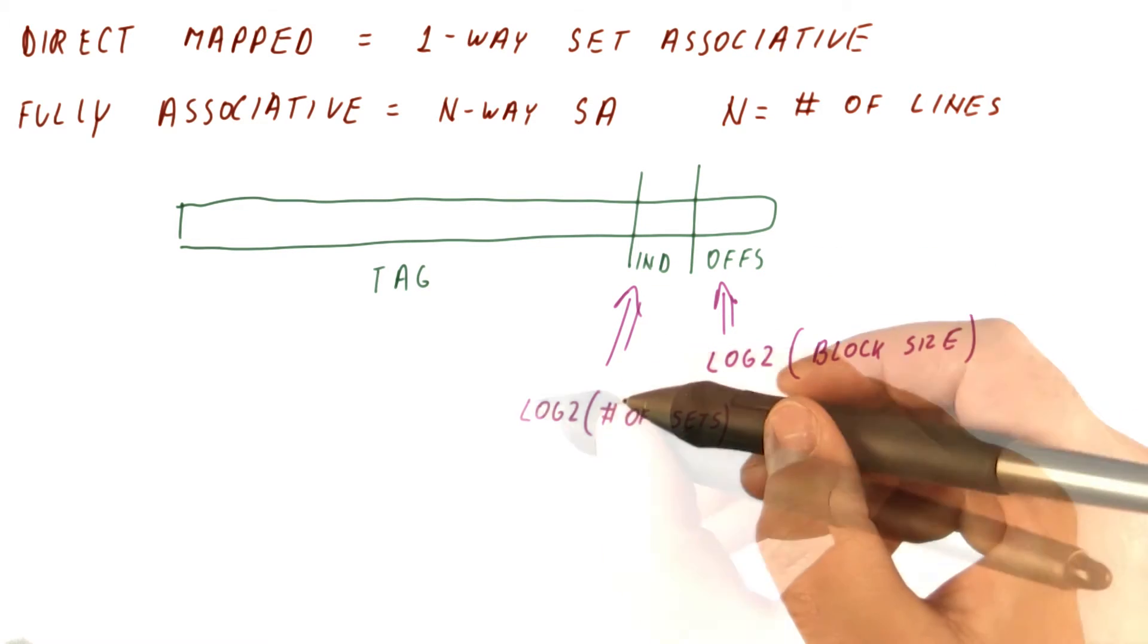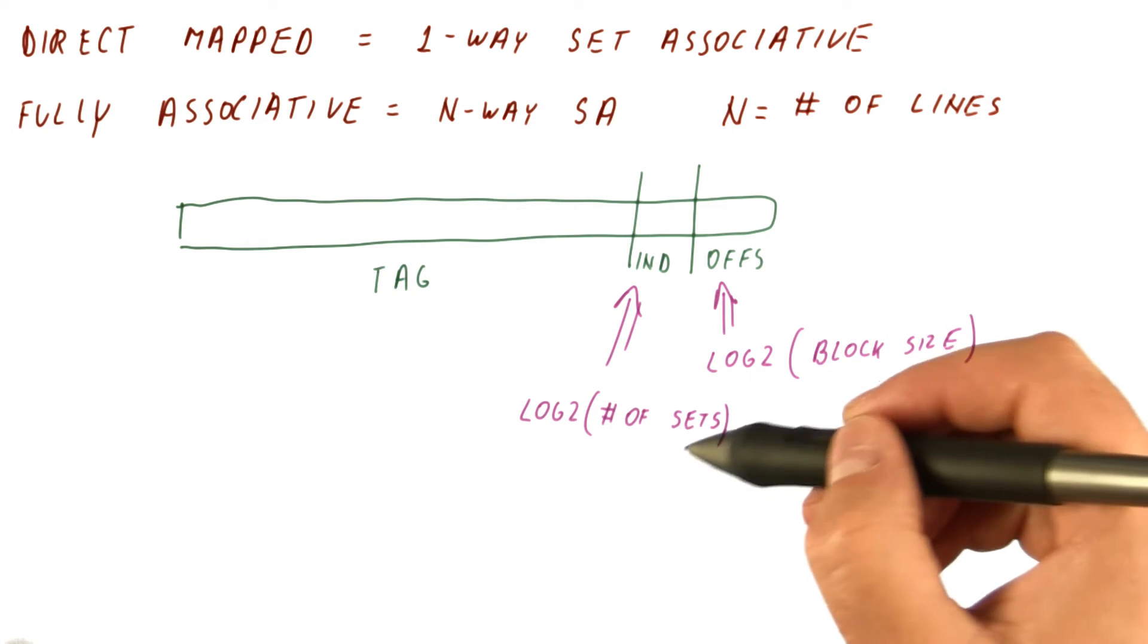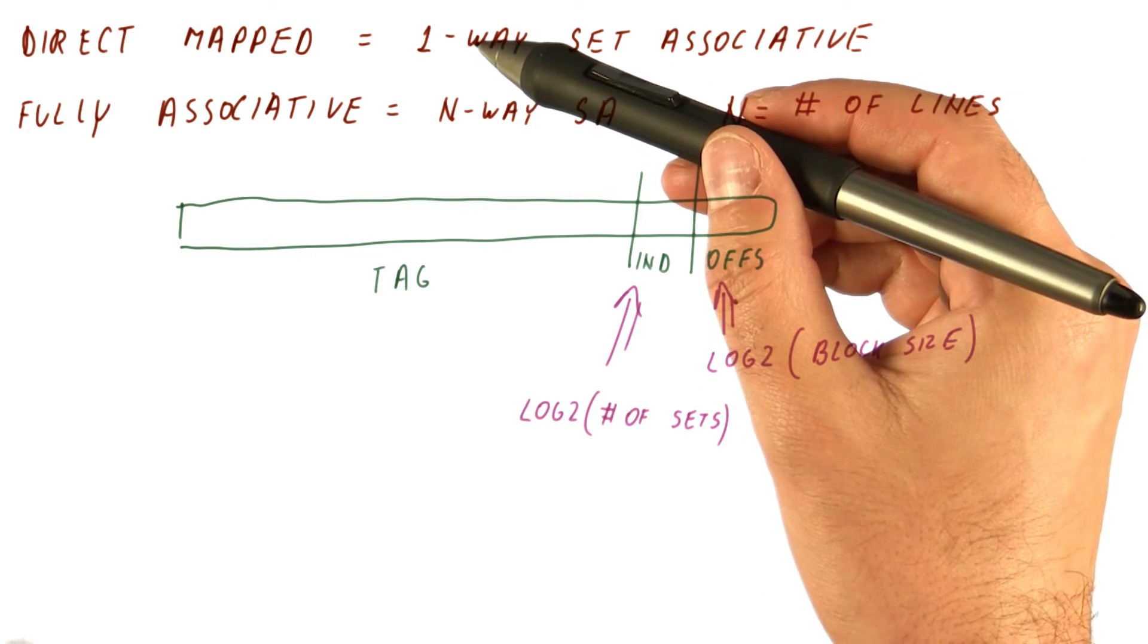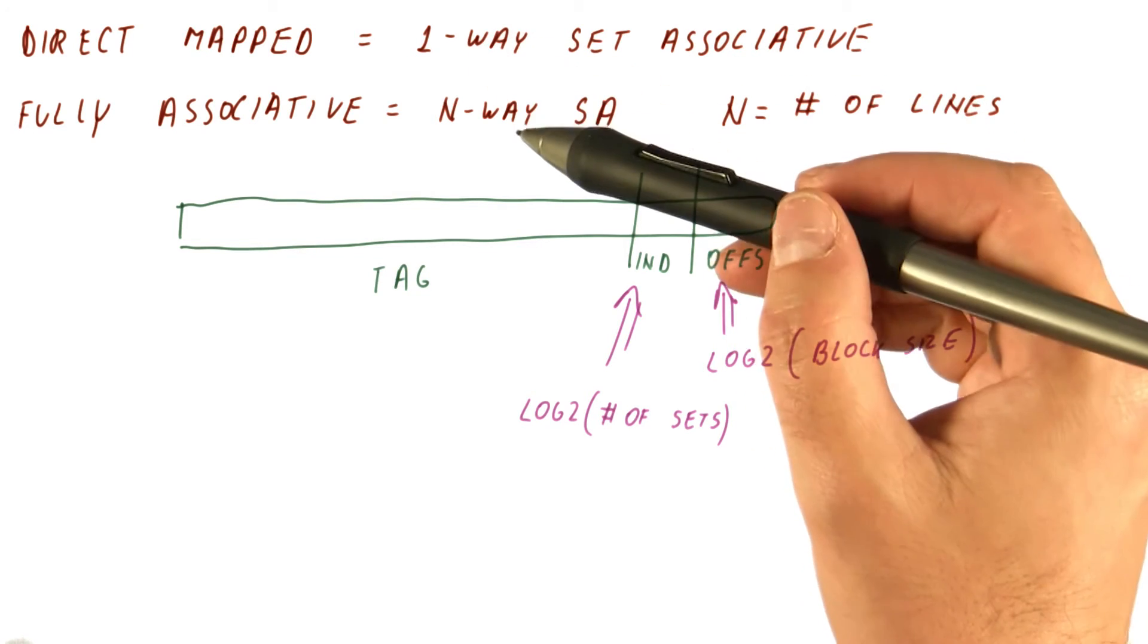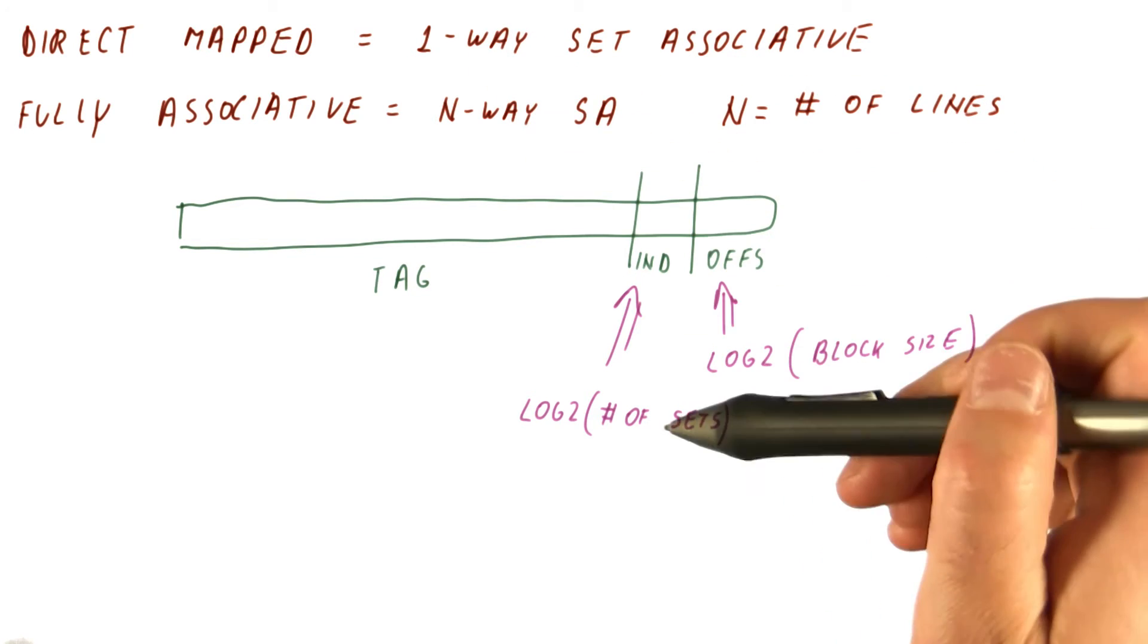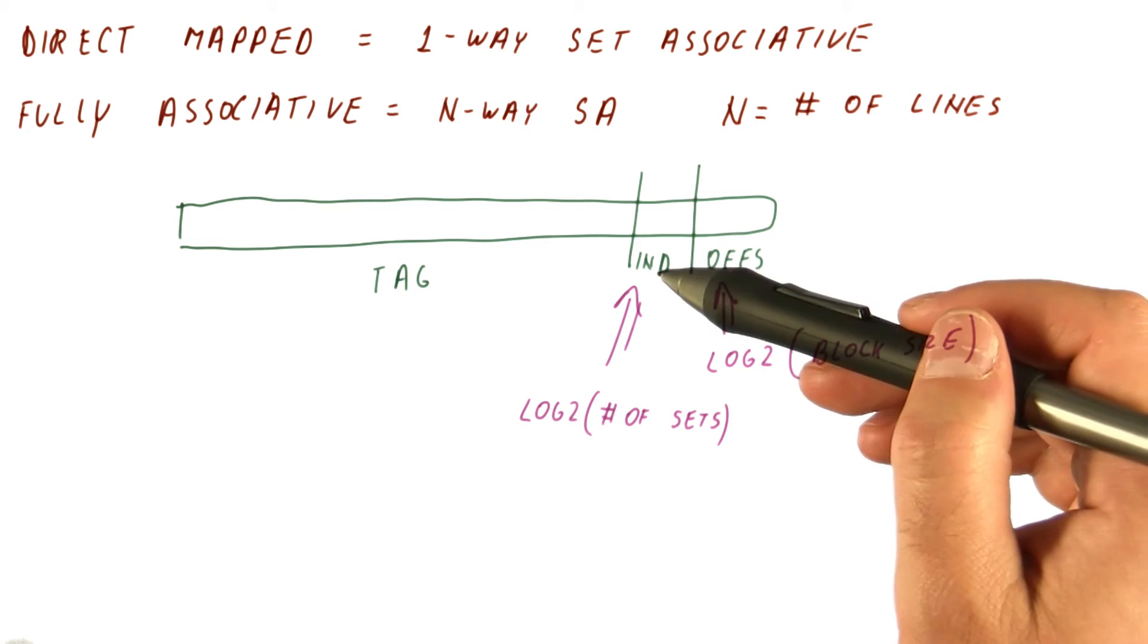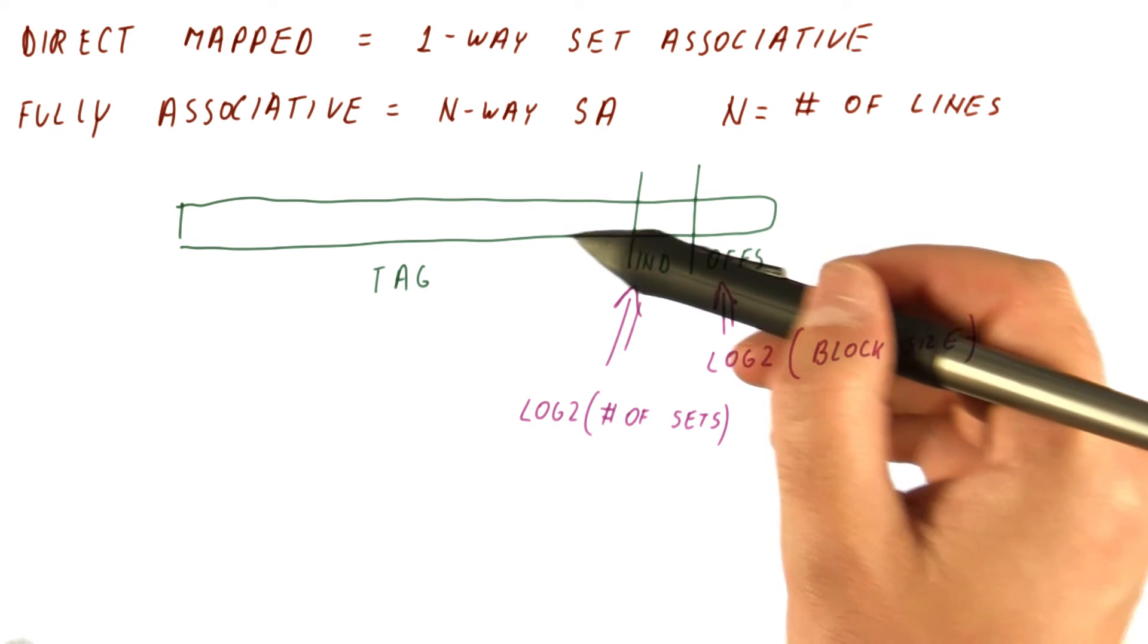The number of index bits is log two of the number of sets we have. In a direct map cache, that is the number of blocks we have. In a fully associative cache, that's one. So log two of that is zero and we have no index bits. And the tag bits are the remaining bits.